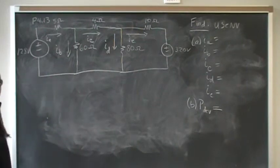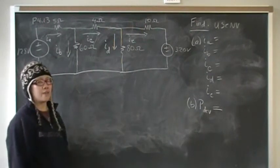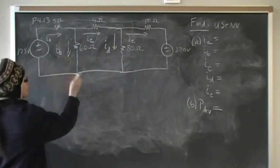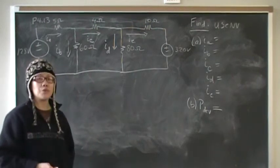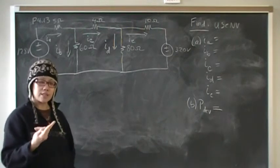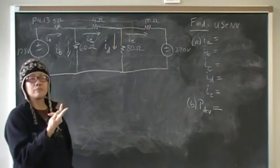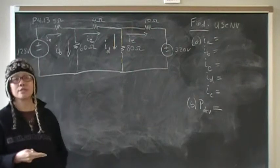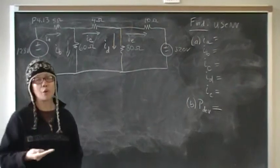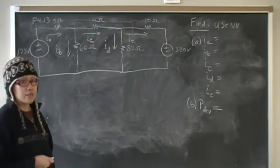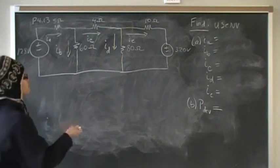Remember that the node voltage method, even though there's a word voltage in it, is really KCL. At each node that you use, you're summing up the currents. And remember the current is the difference between the voltages divided by resistance. Remember, I is equal to V over R, and so that's how the node voltage method works, is by using KCL.